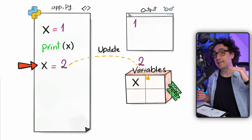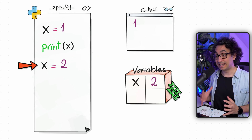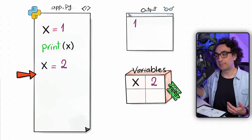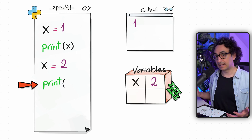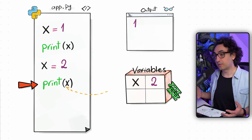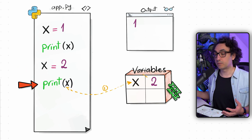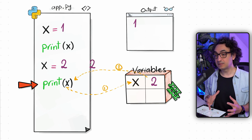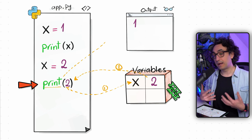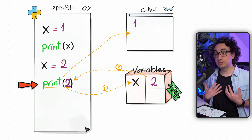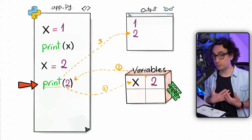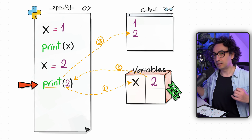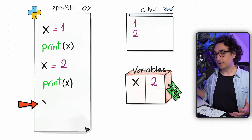If you print x again, the same thing happens: Python searches for x, finds two inside it, returns it to your code, and prints two instead of one. Now I'd like to create a new variable called y, but this time we will not assign a direct value — we'll assign a calculation.